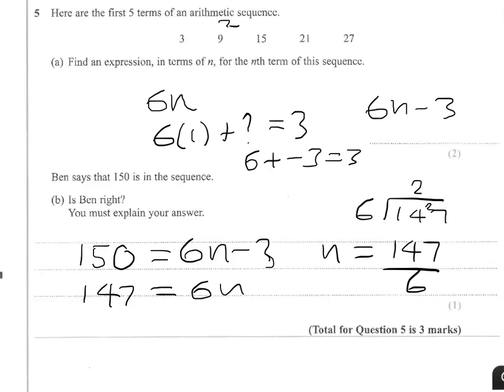So Ben is not right. So the answer is no. Because 6n minus 3 can't make 150. That's your answer.